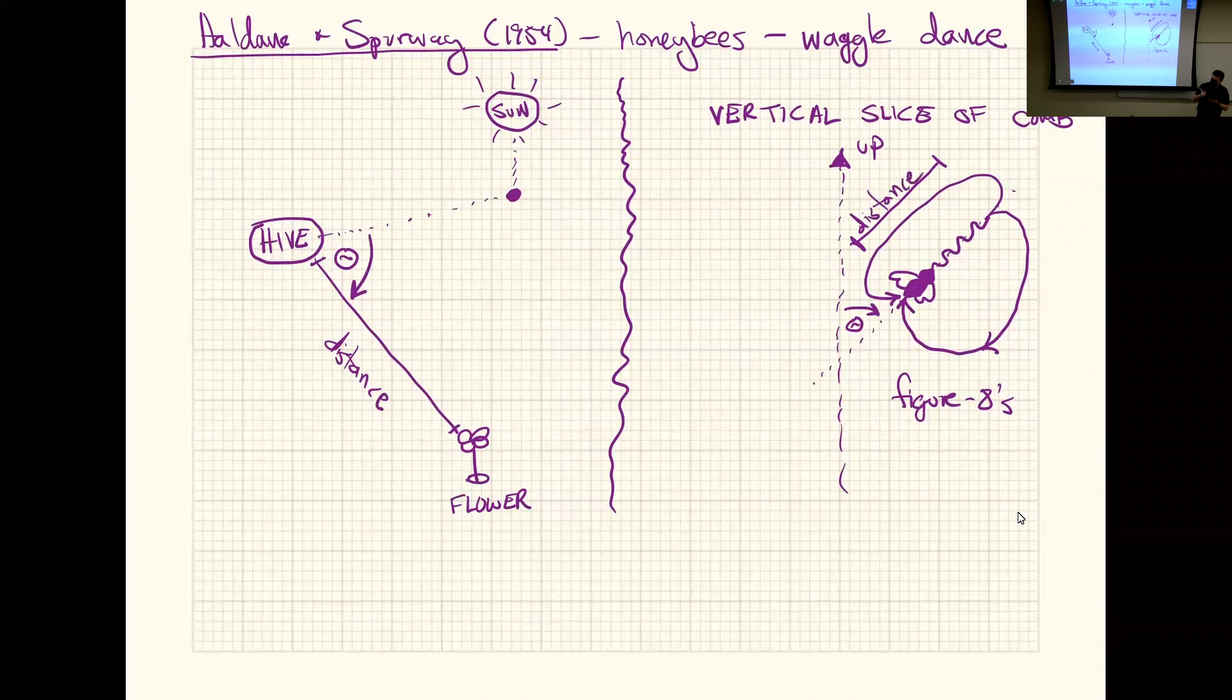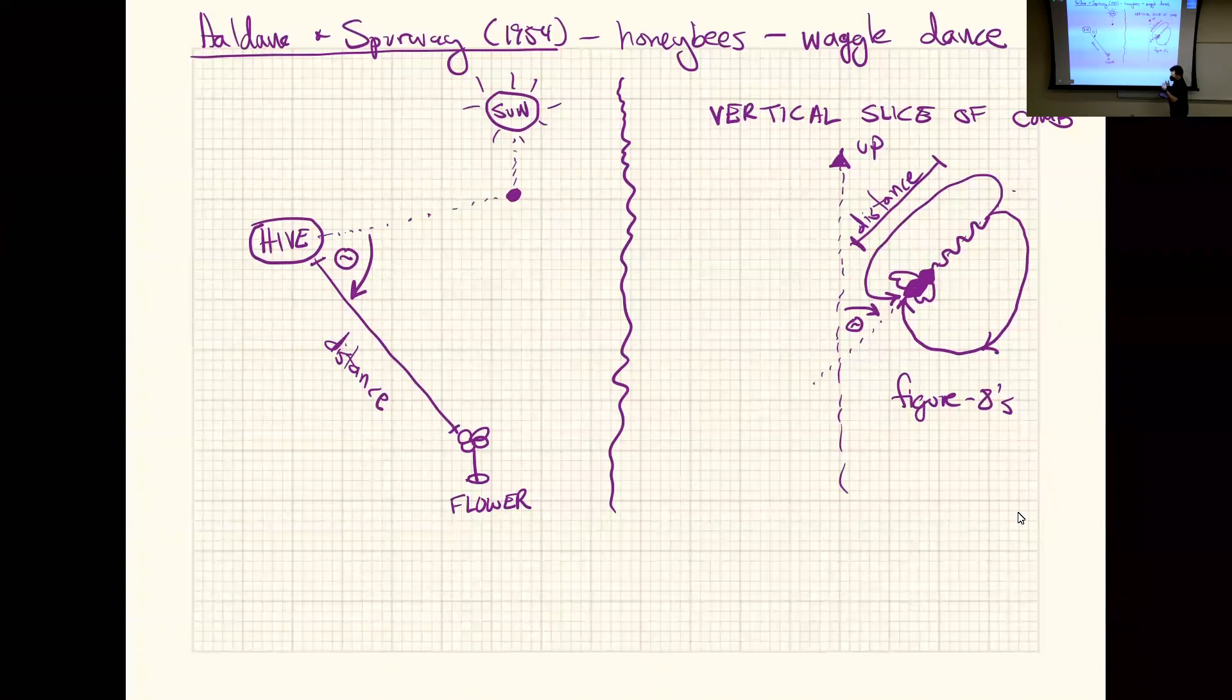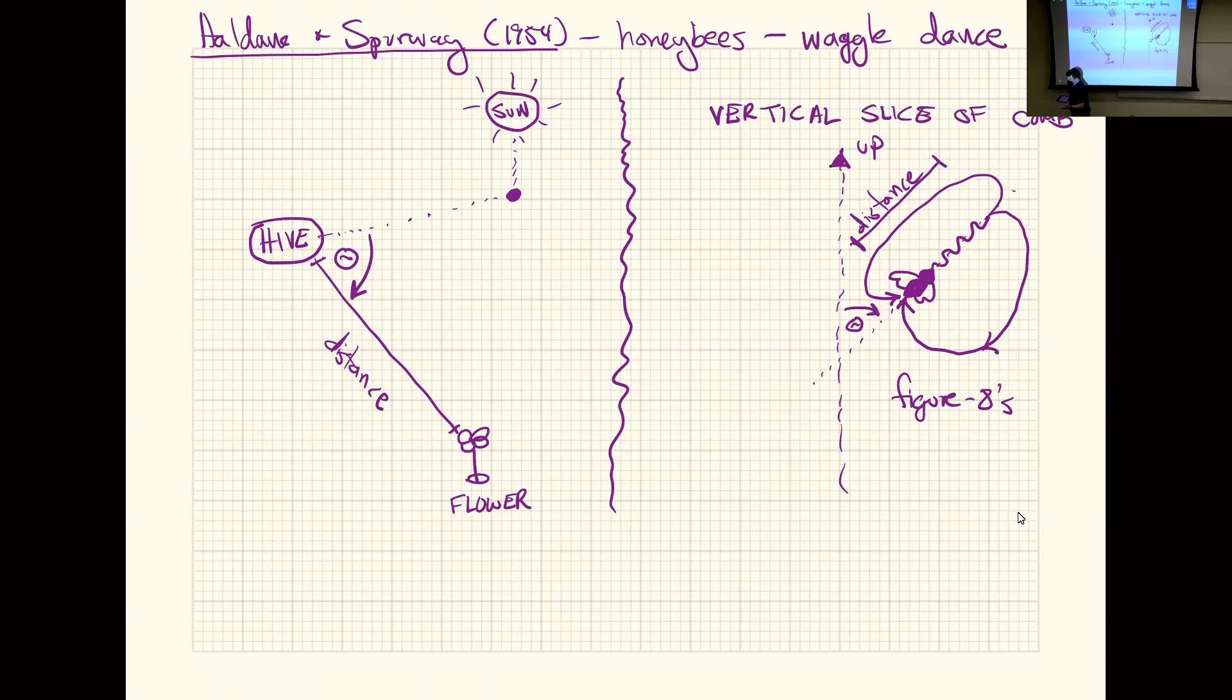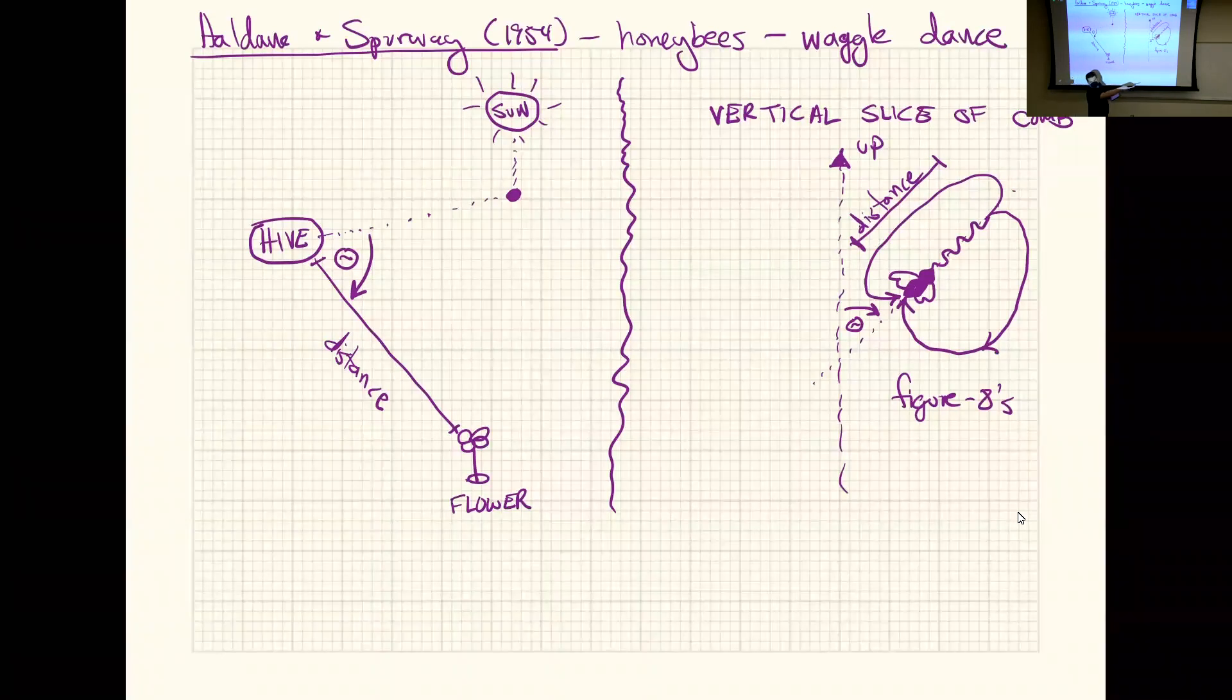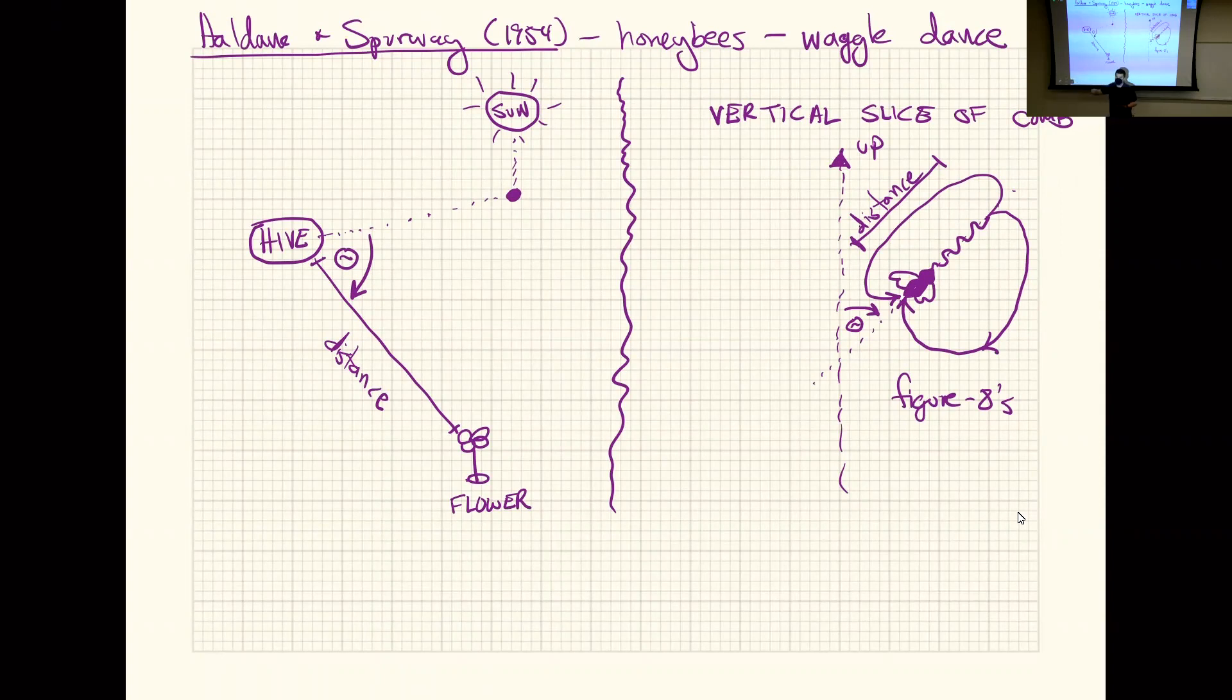The angle she does this dance corresponds to that angle, and it turns out that the length of this waggle run corresponds to distance. For example, I think it's like about one second waggle run is like one kilometer. You can put these at an observation hive. There are several spots, probably the zoo somewhere, there's a butterfly wonderland or something in Scottsdale where they have observation hives of honeybees. If you ever get a chance to look at one, just sit there and watch, and I guarantee eventually you'll see some of these.